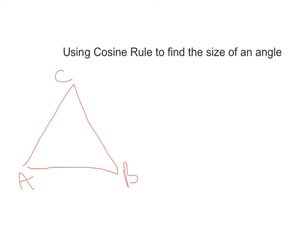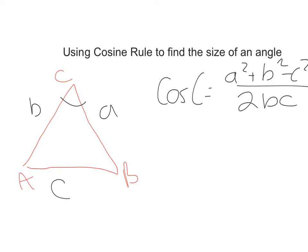In this video, we're going to look at how you apply cosine rule to find the size of an angle. So again, I have my triangle ABC, and I have its matching sides AB and C. And to find, if we were looking for the angle C, we would use cos C equals A squared plus B squared minus C squared, all divided by 2BC. And that's the formula that we're going to use today.